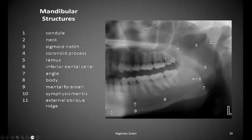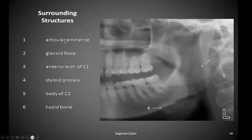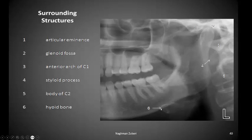On the radiograph we can identify: the condyle, neck of condyle, sigmoid notch, coronoid process, ramus, inferior alveolar canal, angle of the mandible, body of the mandible, mental foramen, symphysis menti, external oblique ridge, and internal oblique ridge. Surrounding structures include the articular eminence, glenoid fossa, anterior arch of the first cervical vertebra, styloid process, body of the second cervical vertebra, and hyoid bone.